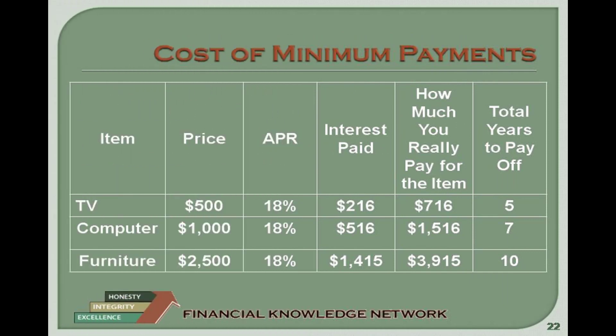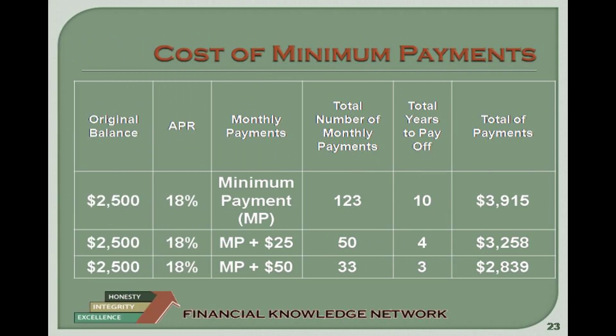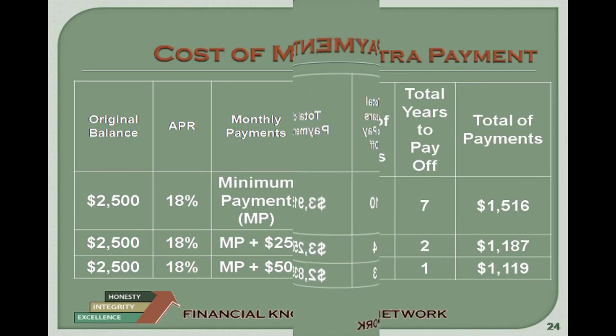Cost of Making the Minimum Payment: Assumptions for this table include an 18% APR — if the APR is higher, the item would be more expensive and take longer to pay off. The minimum monthly payment equals the greater of $10 or 4% of the balance. The average daily balance method is used to calculate interest. The finance charge for one day equals 18% divided by 365, times the daily balance. Assumptions also include no grace period, no late payments, and no additional purchases. Beginning around 2008, you are able to contact credit card companies by phone to find out the time and interest required to pay off a balance if only the minimum monthly payment is made.